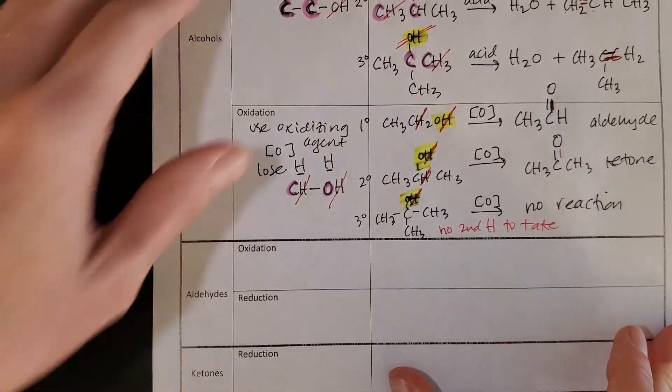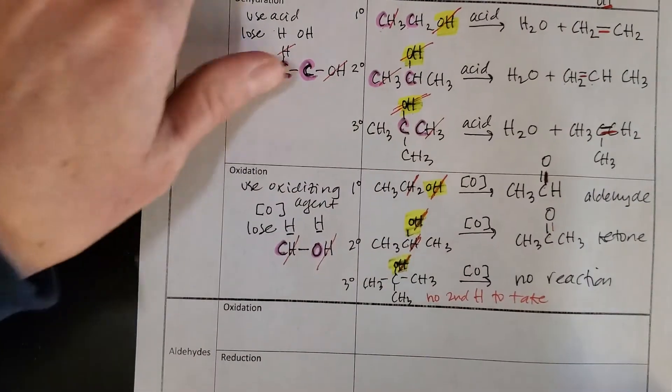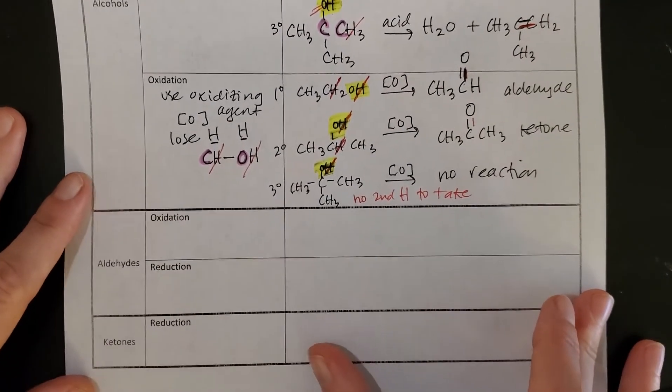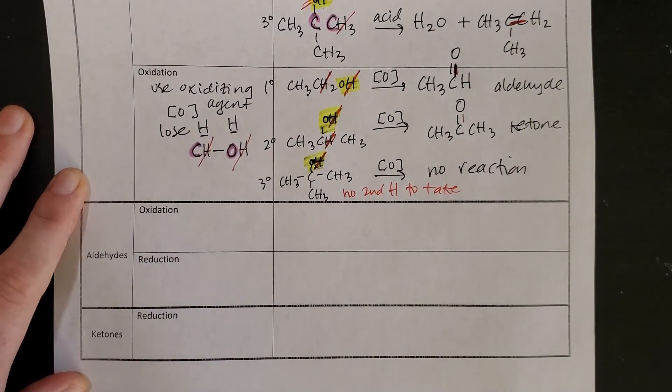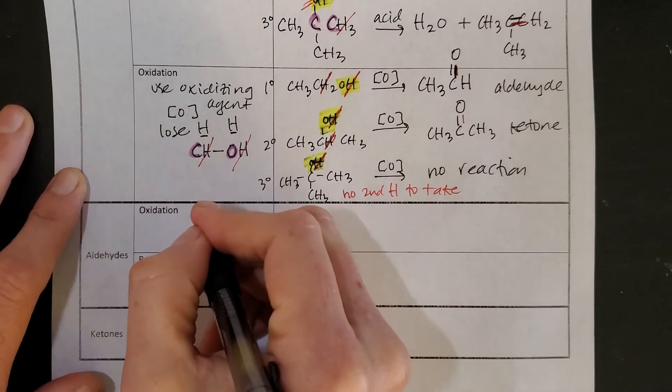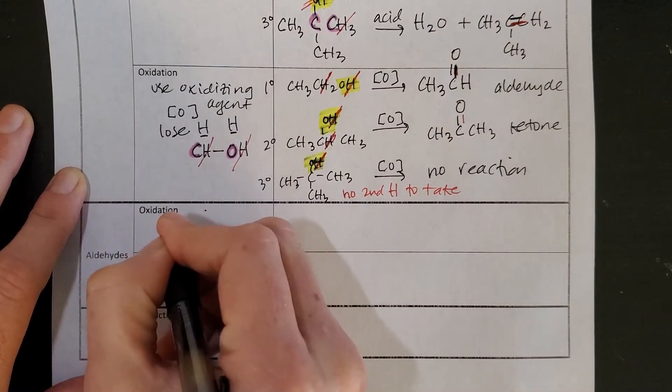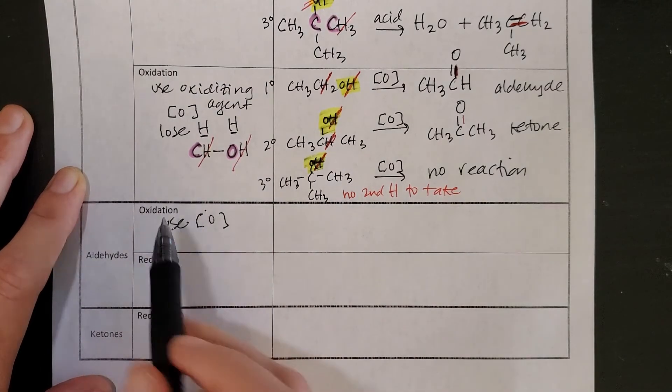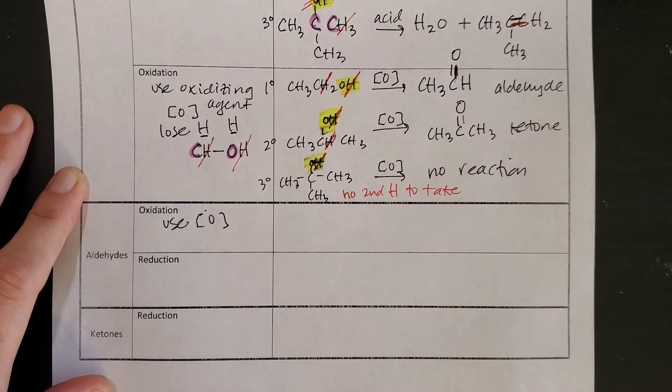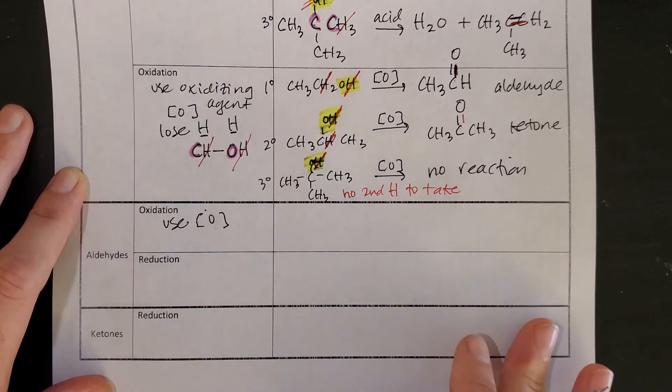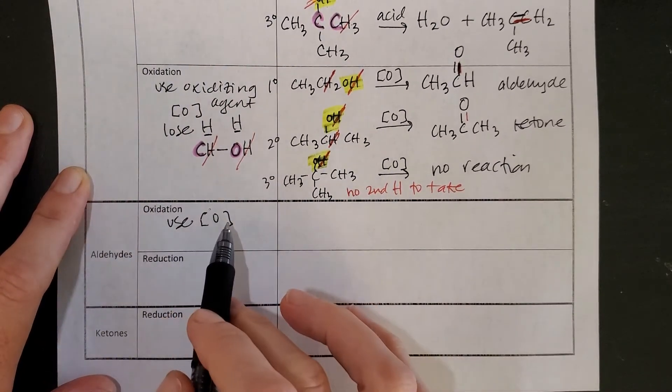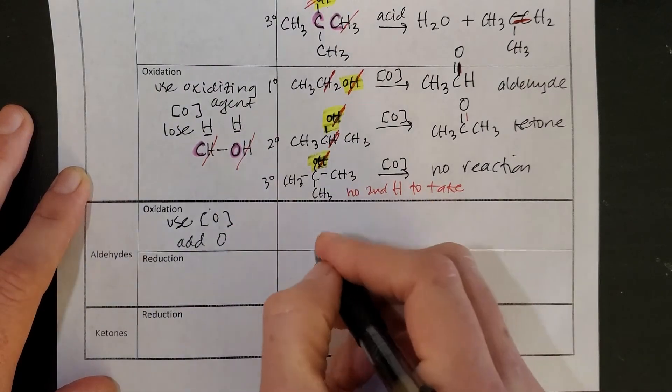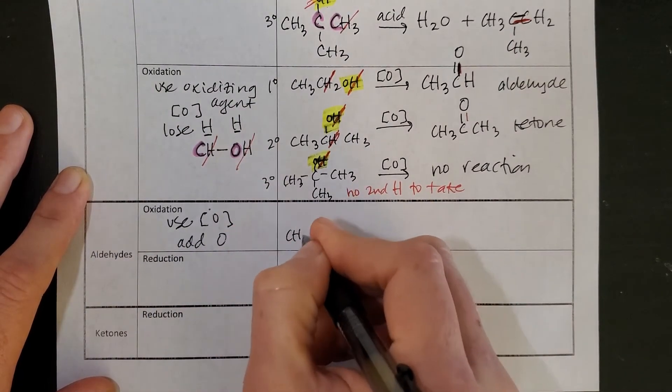Moving down to our last couple of reactions here. We have now aldehydes and ketones. So taking a look at our aldehydes. Aldehydes, when we oxidize those, again, we are going to use an oxidizing agent. This is an exception to our reactions we've seen so far. We normally gain two or lose two hydrogens. Here we're going to use our oxidizing agent instead to add an oxygen. So here's what that looks like. I take an aldehyde and I oxidize it.